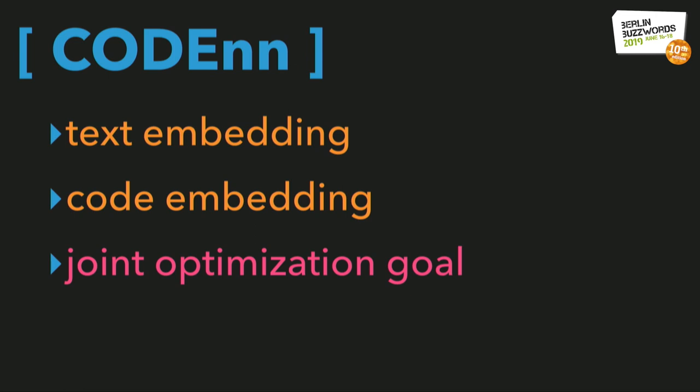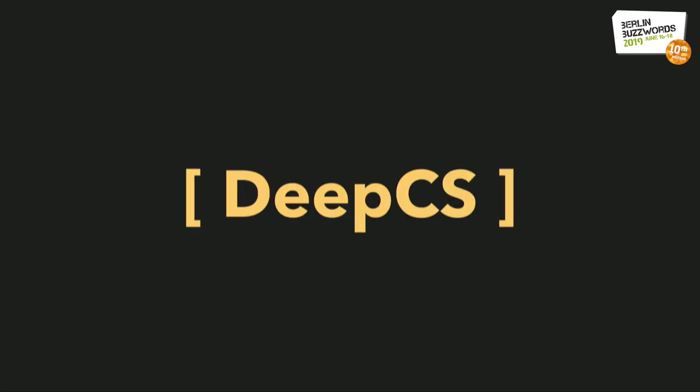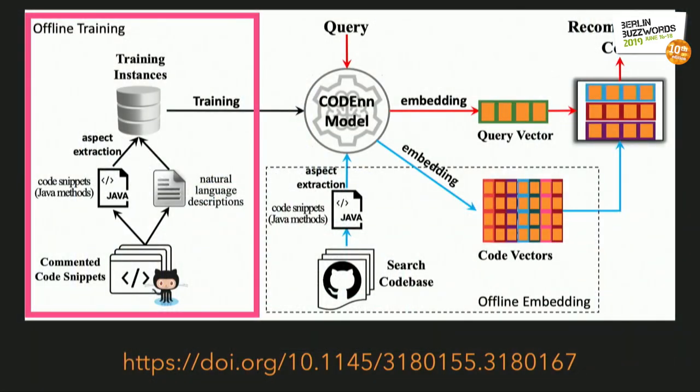So we've got an embedding method for text, an embedding method for code, and a trick for learning both simultaneously. But this is a supervised machine learning problem—where does the training data come from? As a demonstration of feasibility, the team behind CodeNN built a system for code search called DeepCS. It works in three phases. The first uses 18 million Java methods and their associated doc strings, all scraped from GitHub, to train both the code and natural language embeddings. This is done once; the code and doc strings are then discarded and only the learned transformations are retained.